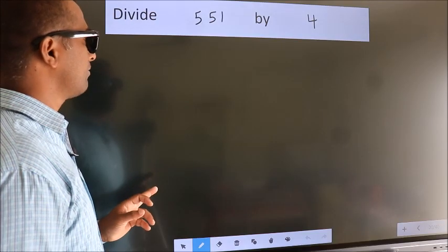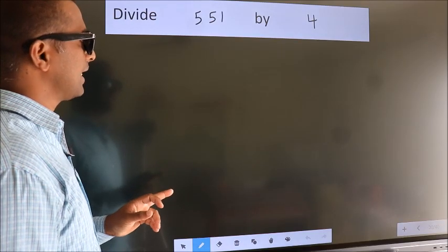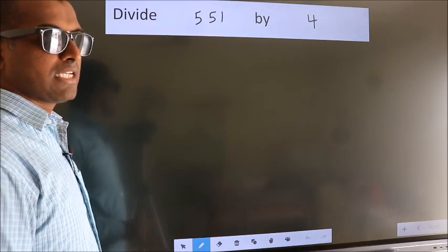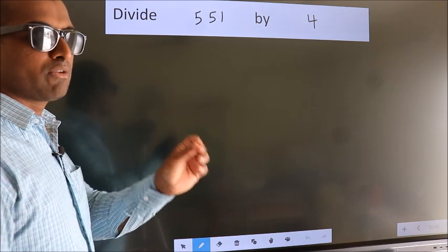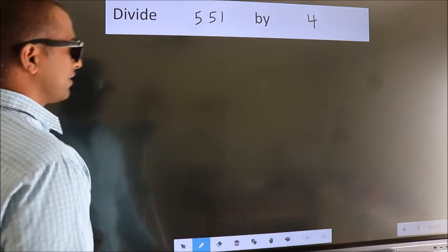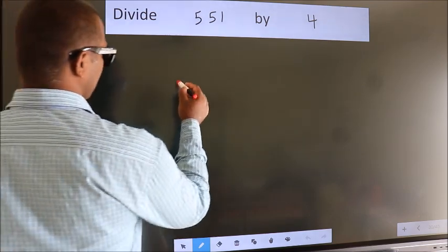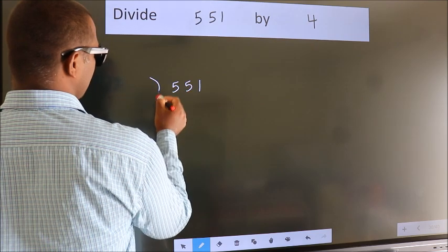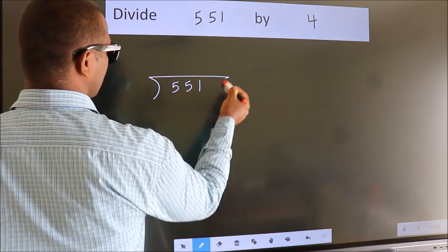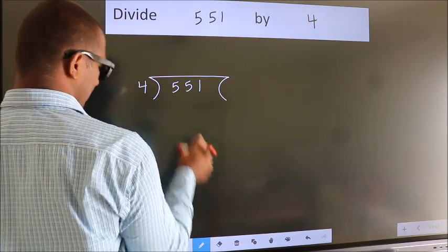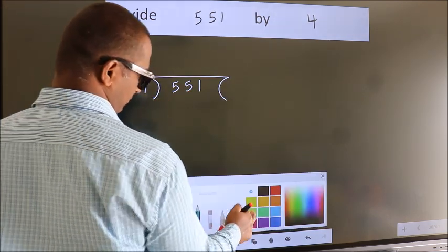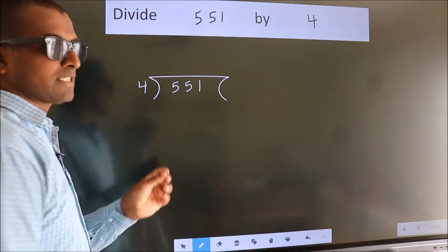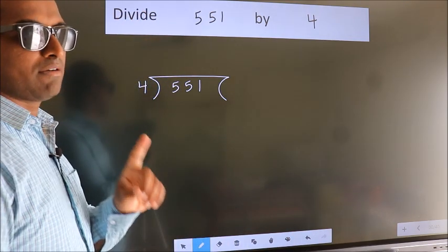Divide 551 by 4. To do this division, we should frame it in this way: 551 here, 4 here. This is your step 1.